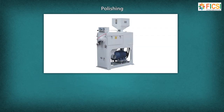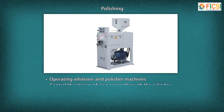Polishing: A grain mill operator performs the following tasks at the polishing stage: operating the whitener and polisher machines, and controlling the stream of air passing through the cylinder to cool the grain and to blow off the bran.